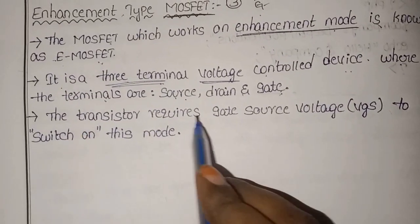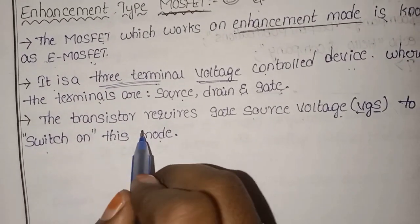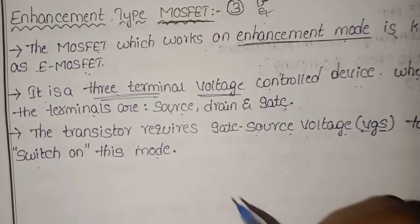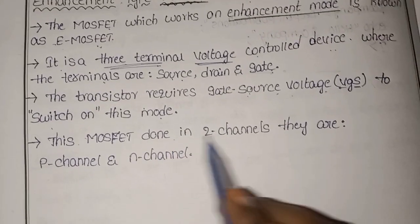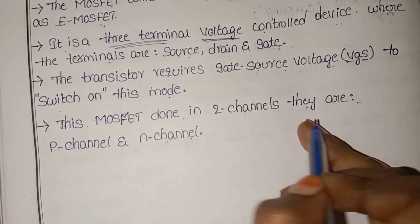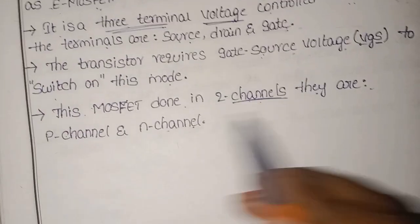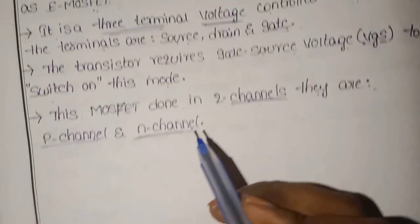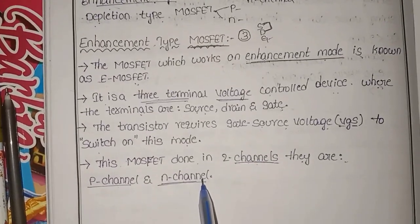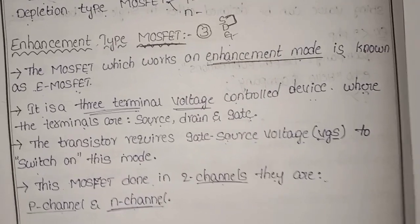The transistor requires gate-source voltage VGS to switch on. This MOSFET is divided into two channels. One is P-channel and the other is N-channel MOSFET. P-channel and N-channel enhancement MOSFETs have a clear difference between the two.